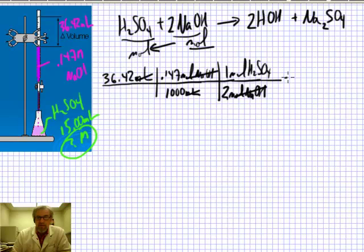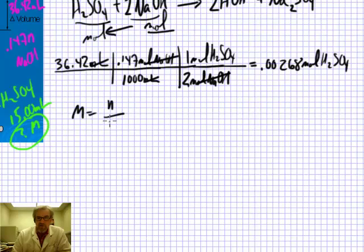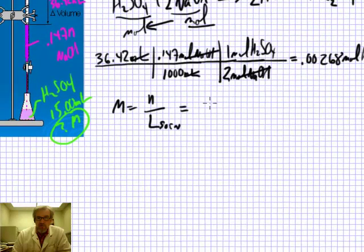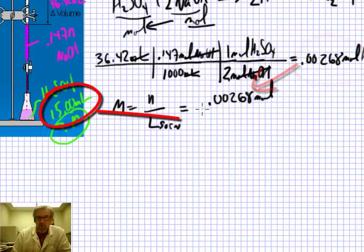I'm going to stop there because that's really what I want to know, how many moles are in every liter. When I do this calculation, I get 0.00268 moles of H2SO4 must have been in the flask. So our objective is to find out the molarity, and we know that molarity is number of moles divided by liters of solution. So in this case, that means 0.00268 moles of H2SO4 were in 15 milliliters.